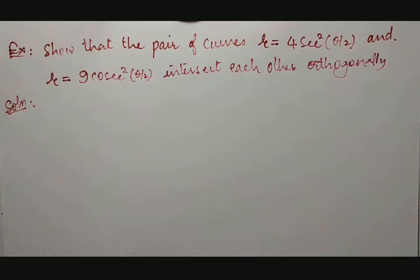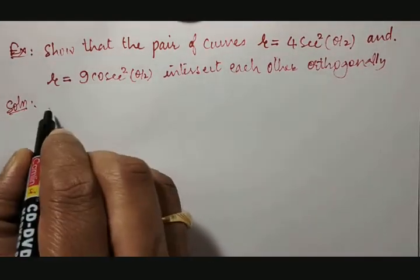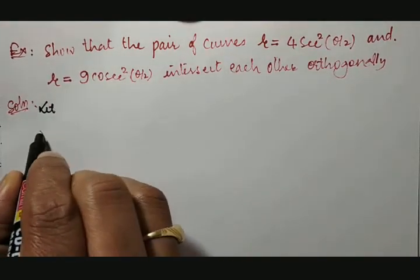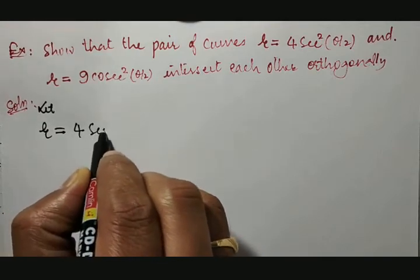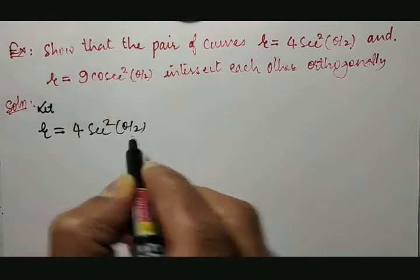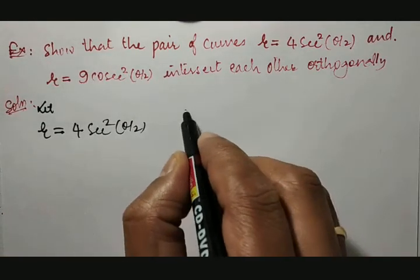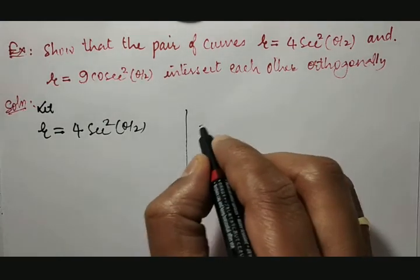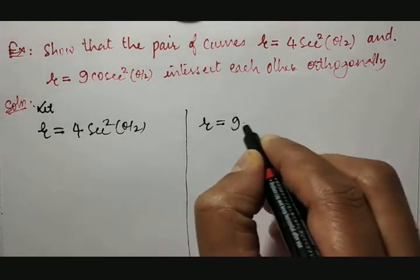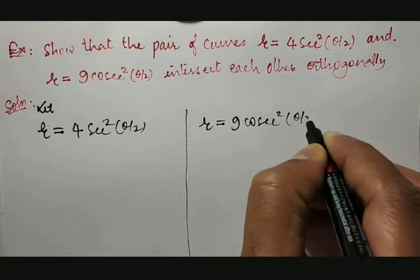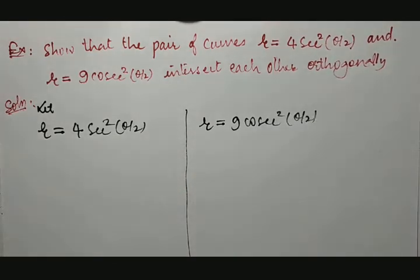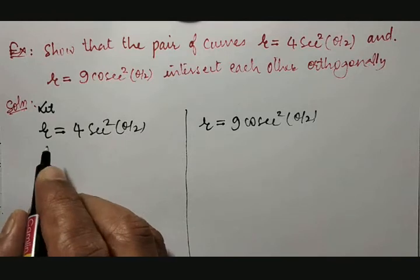In this case, what we are going to do — there are two curves. These two curves will be mentioned first. One is r = 4 sec²(θ/2), and the other one is r = 9 cosec²(θ/2). These are the two polar curves given.